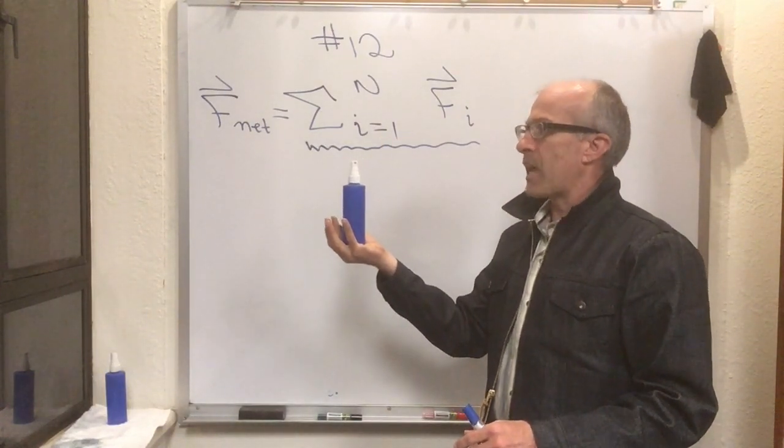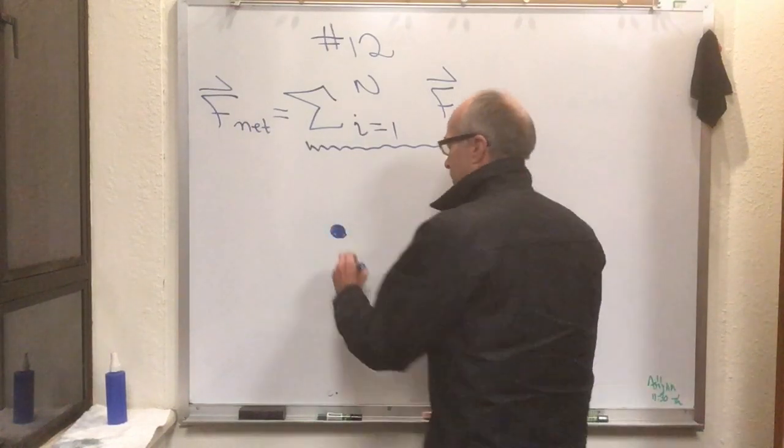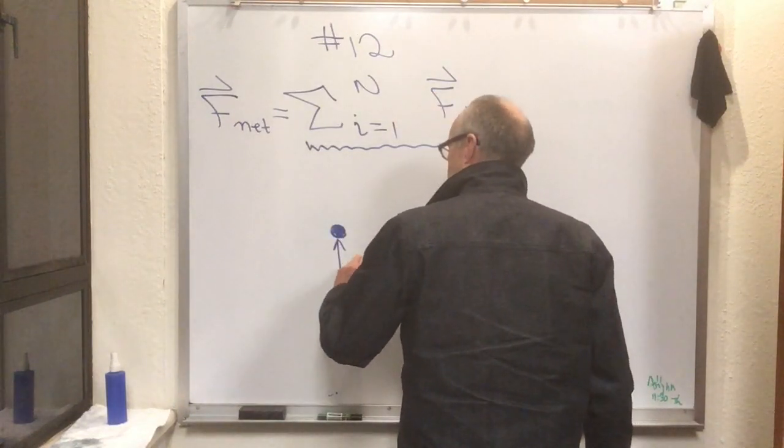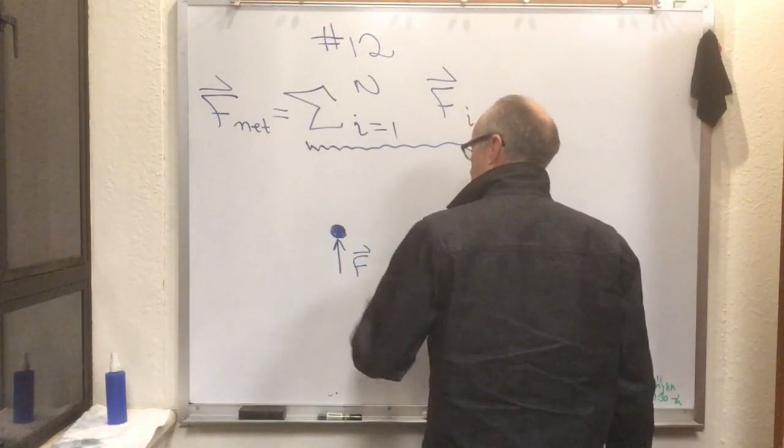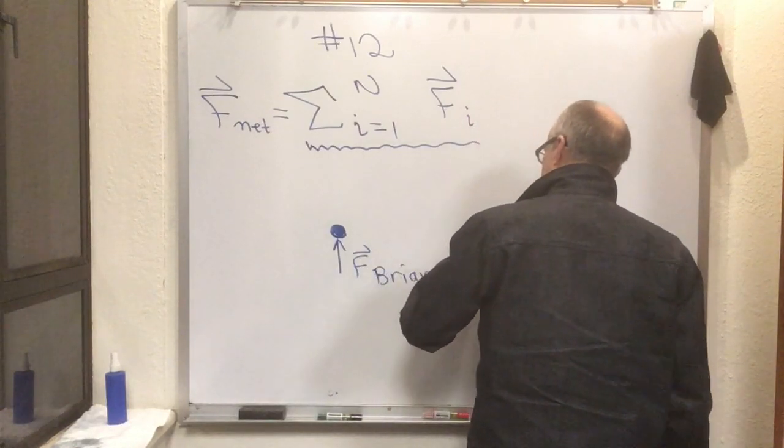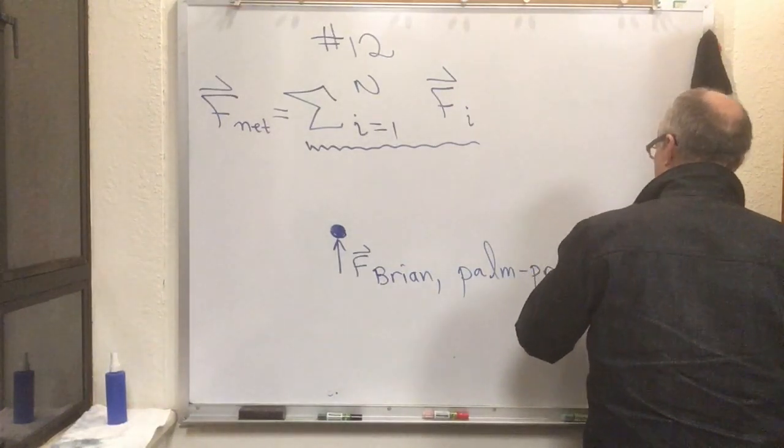Think about what's acting on the bottle. There's me acting on the bottle, that's like F Brian comma palm press on bottle.